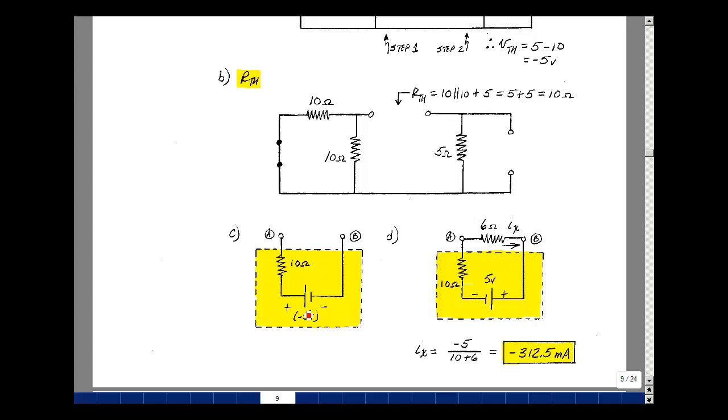If you don't like minus signs, you could flip this over, get a plus 5 in this direction, and now put the load back on.